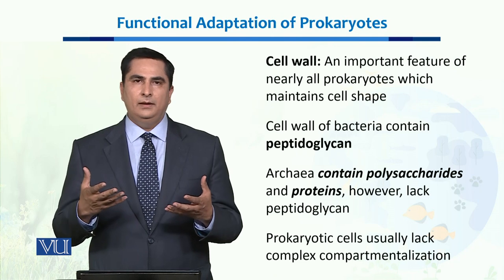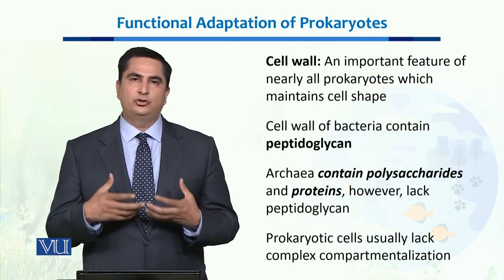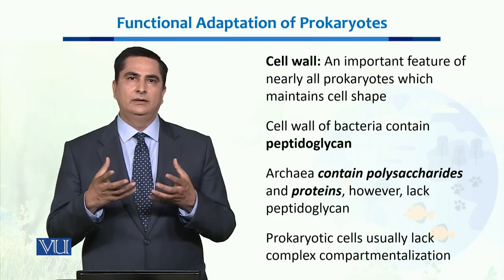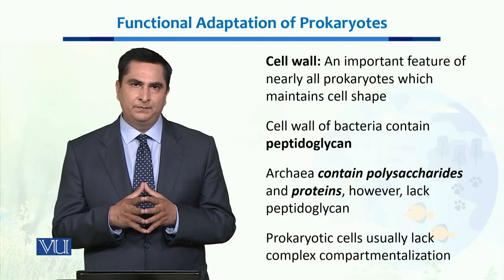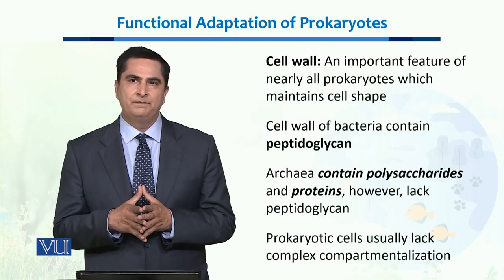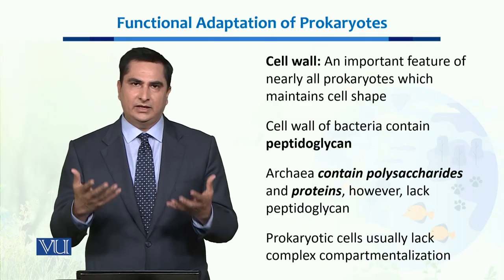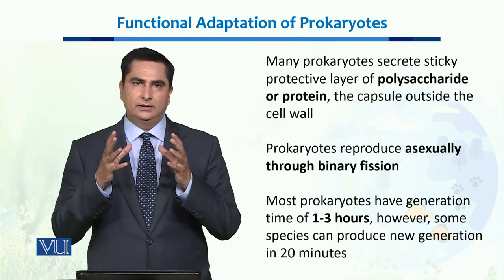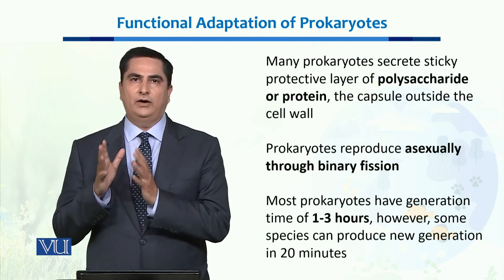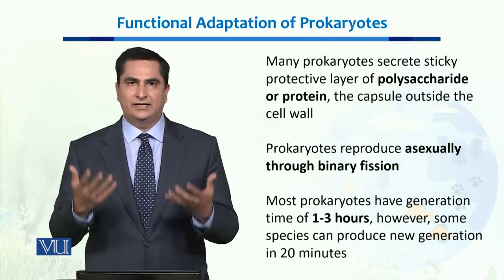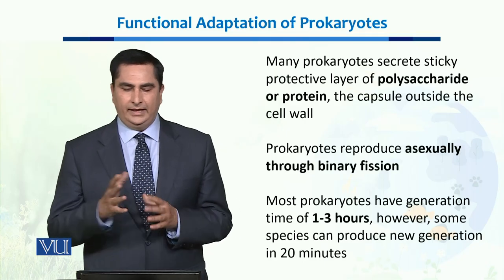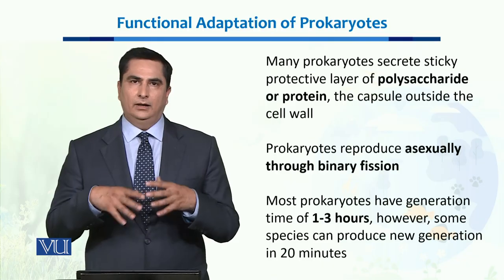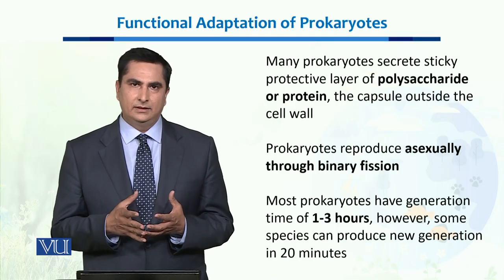In order to successfully survive in an ecosystem, they have equipped themselves with special functions of the cell wall or the cell membranes. When we talk about eukaryotes, eukaryotes have different specialized compartments or organelles to perform different functions. Prokaryotes lack those organelles, yet they do all functions which are vital for the survival of an organism. For example, they secrete a protective layer of polysaccharides or proteins which helps them to avoid the desiccation process so that they can survive.